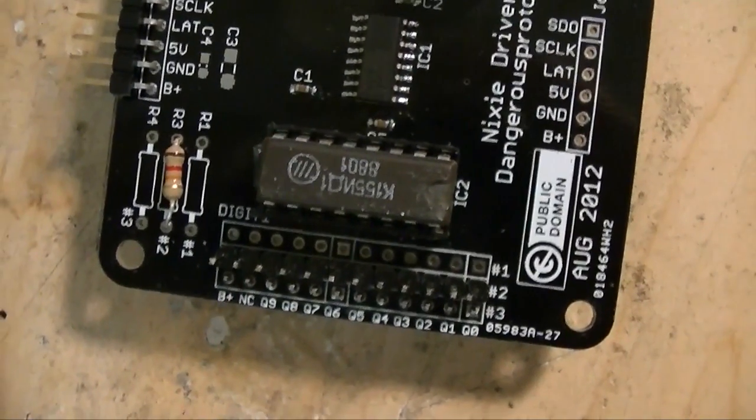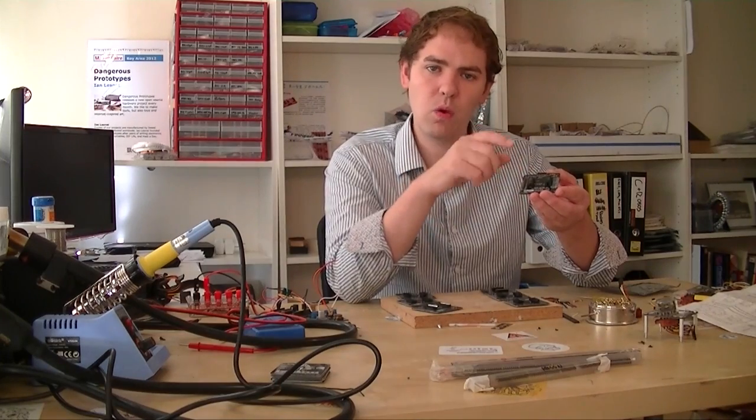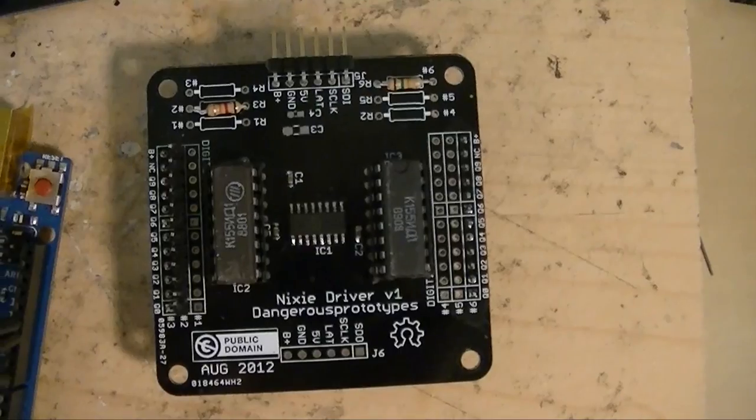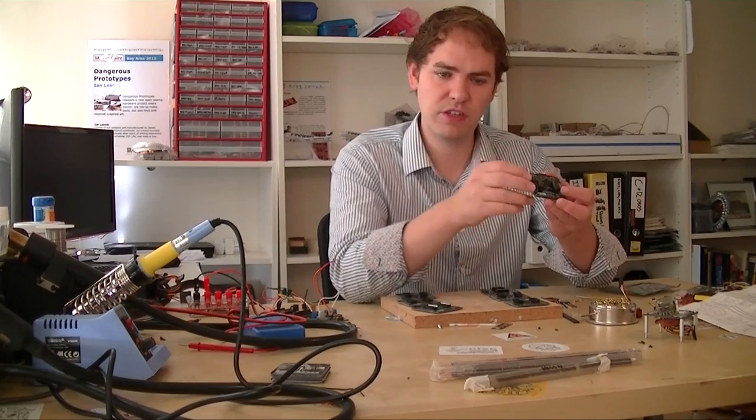These are binary to decimal converter chips. So there's four pins that are inputs and they control which of the ten digits inside the Nixie Tube lights up. On the carrier board, we've got two to drive the two Nixie tubes on front.